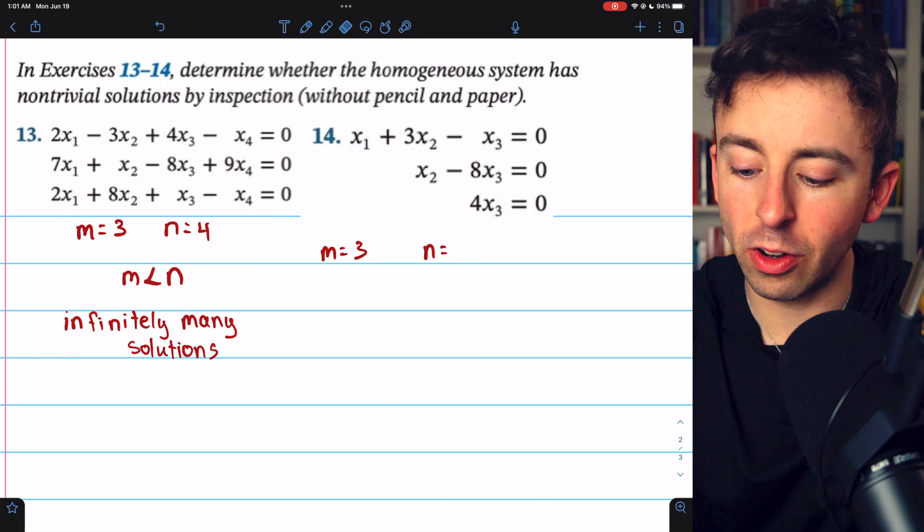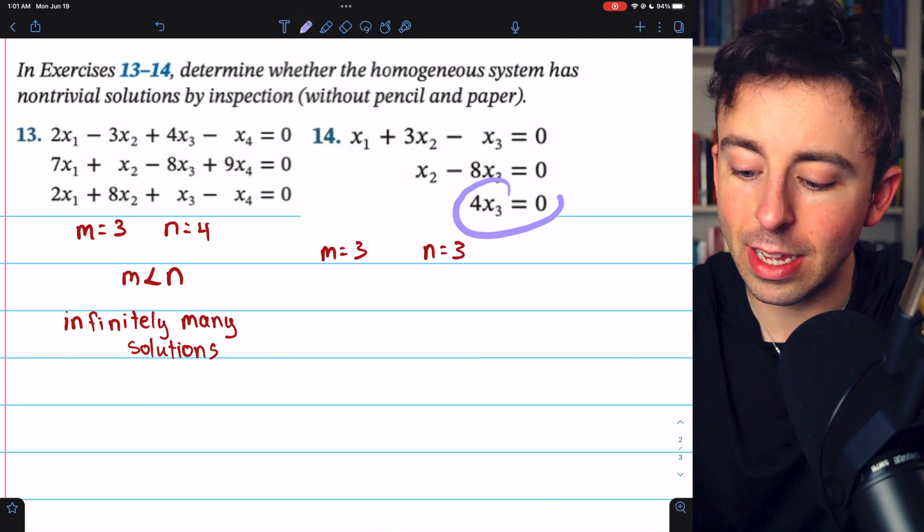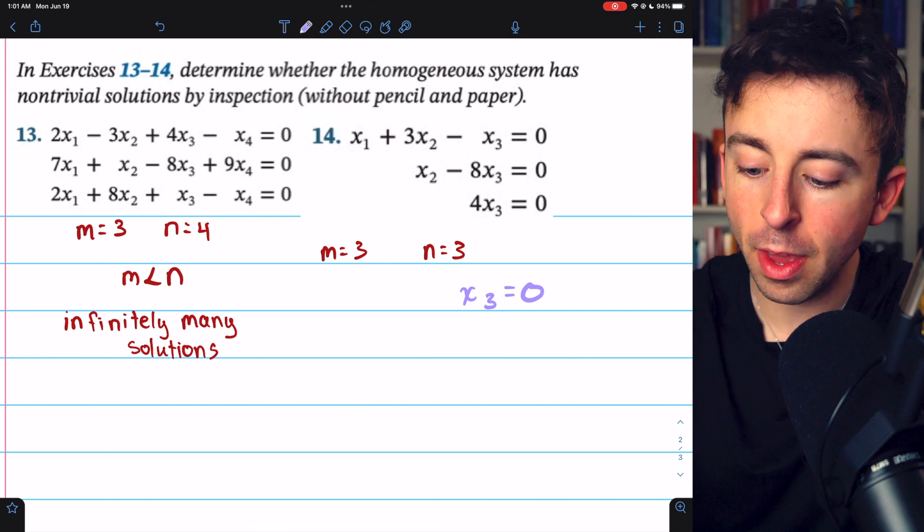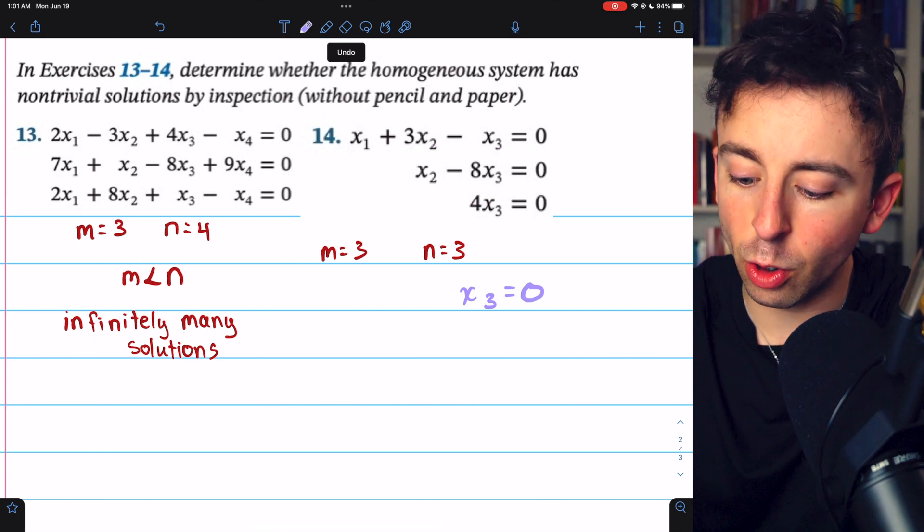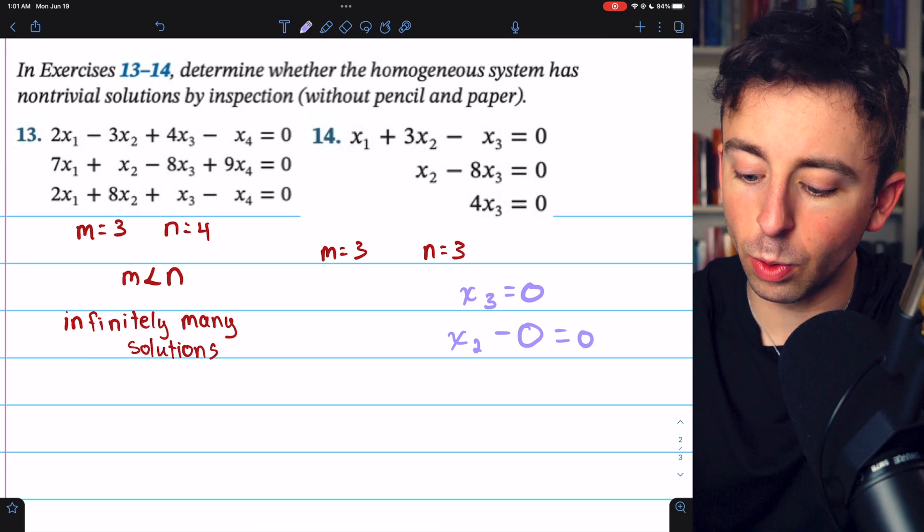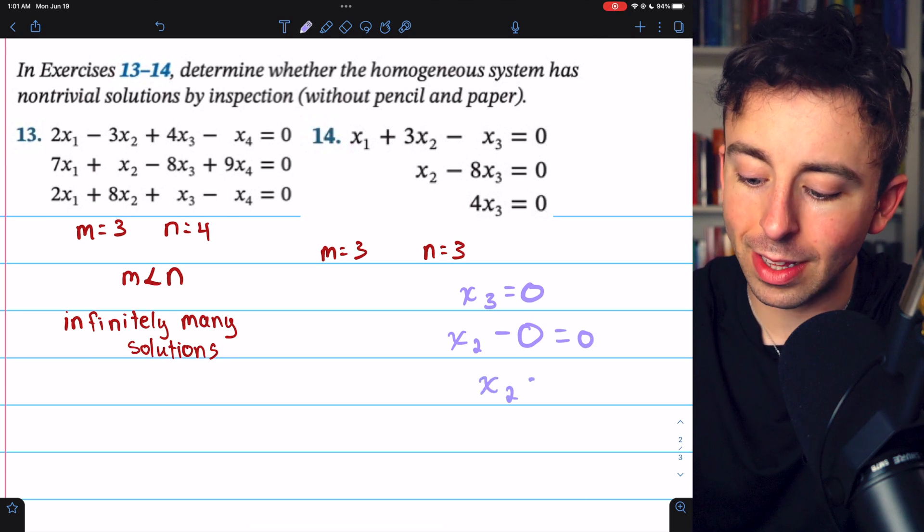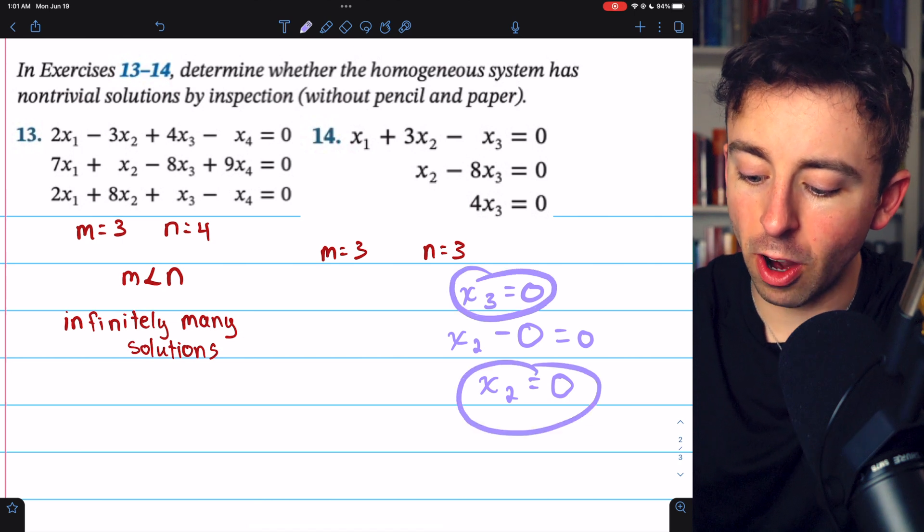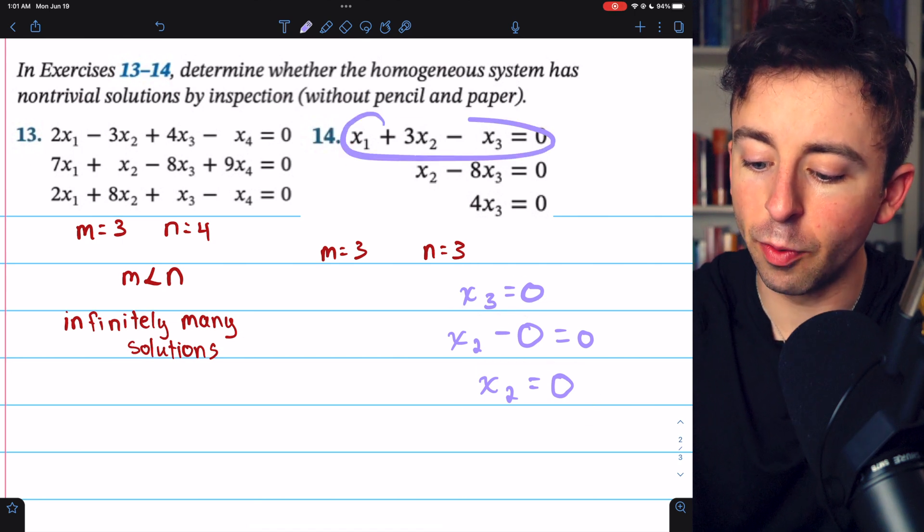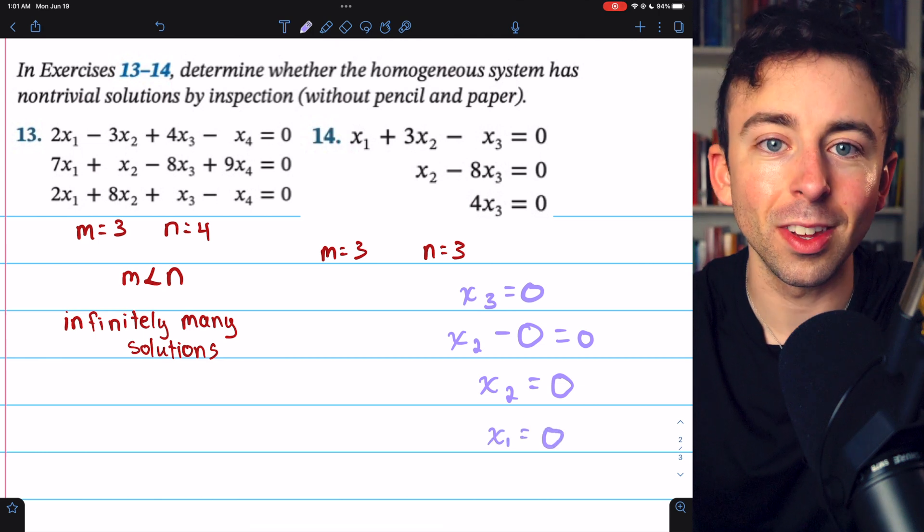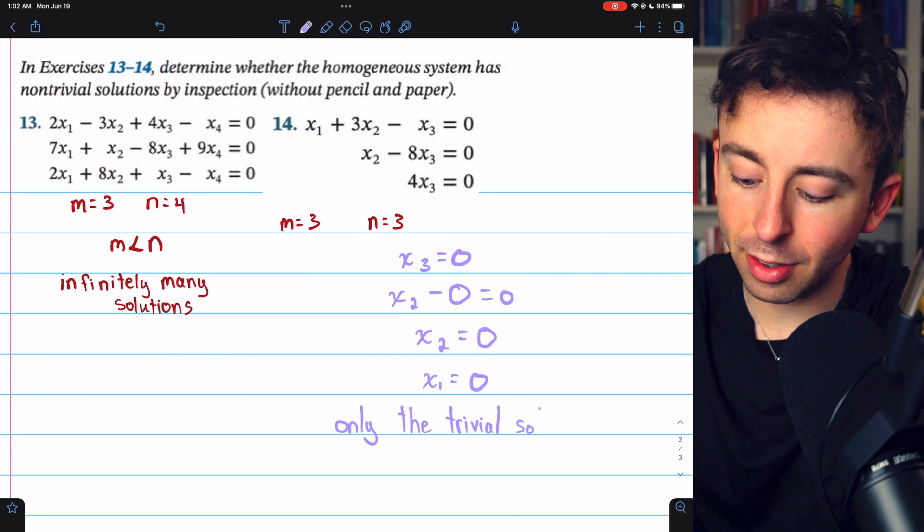Starting with this last equation, 4x3 = 0, that implies that x3 equals zero. But then if we plug that into the second equation, that means that x2 minus zero equals zero, which of course means that x2 equals zero. But then if we plug x3 equals zero and x2 equals zero into the first equation, we get that x1 also equals zero.